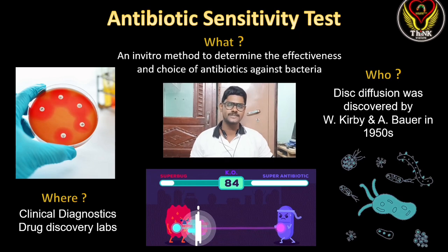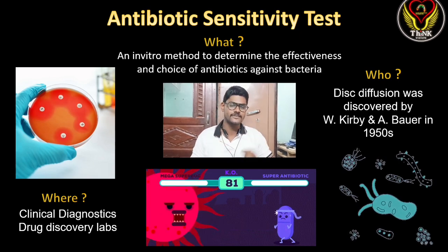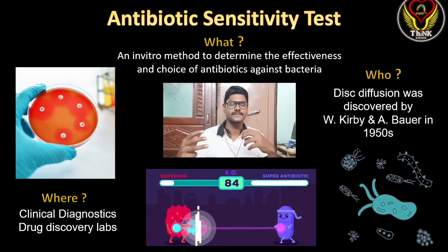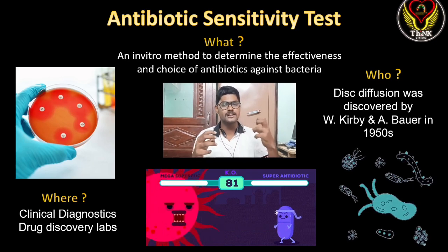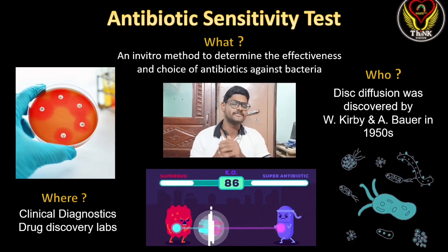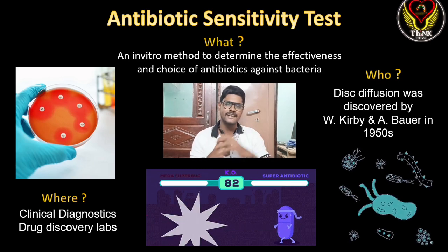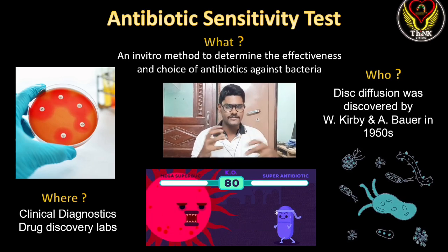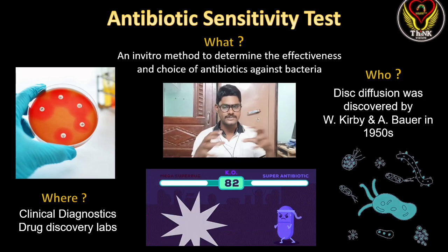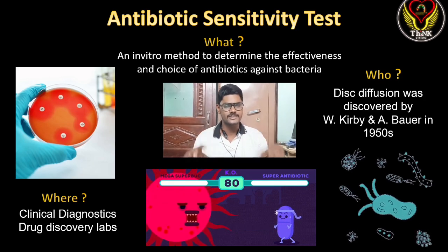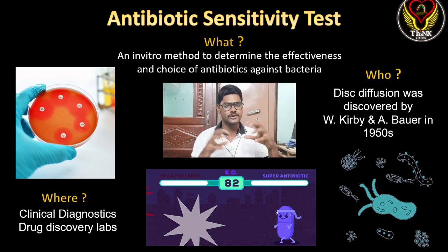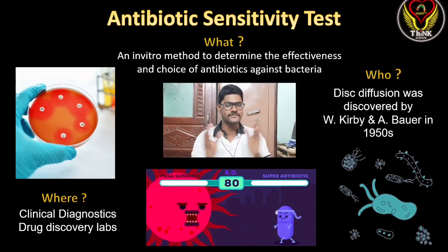In clinical diagnosis labs we use this antibiotic sensitivity test, and before drug discovery also — if you are finding a new antibiotic against some bacterial infections, to test that efficiency we use this test. There are different types of antibiotic sensitivity tests; in this video we discuss the disc diffusion method, which was discovered by Kirby and Bauer in the 1950s.